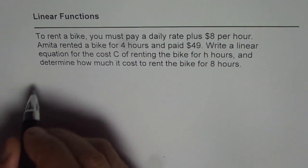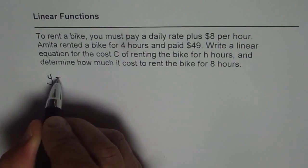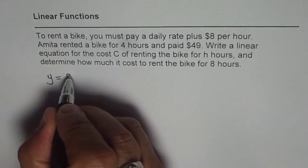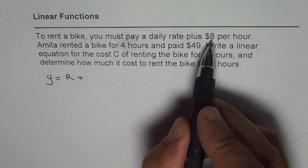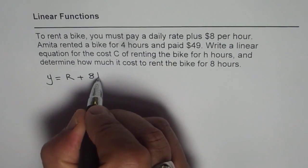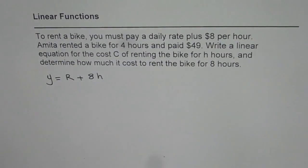So I can from here write down my function as y equals to a fixed daily rate. Let me call that as R plus a variable rate of 8 per hour. That means $8 times H where H is number of hours. So that gives us the equation.